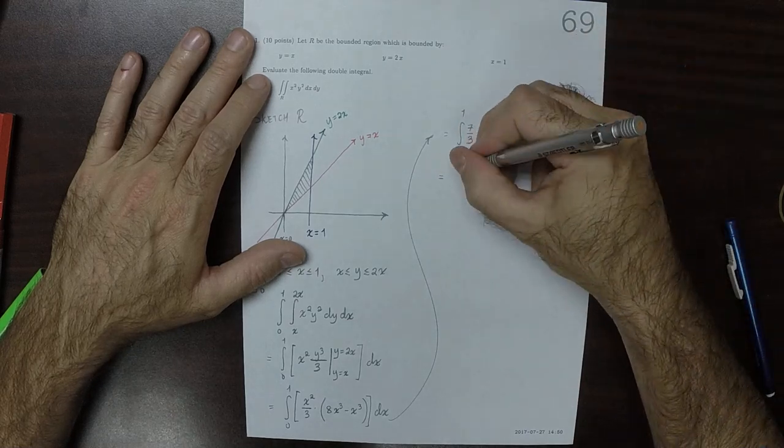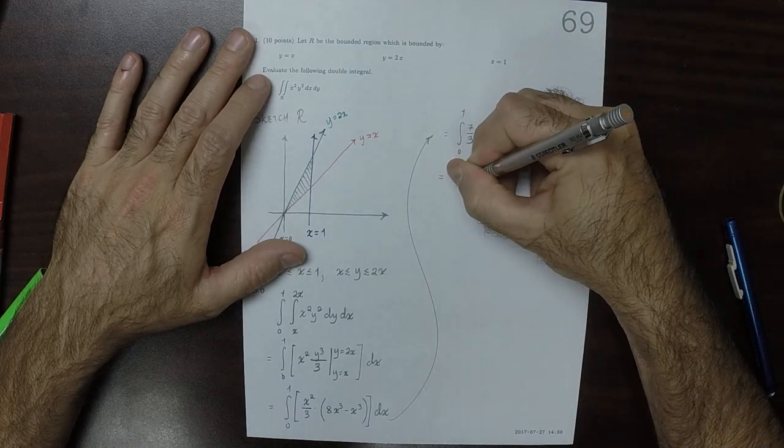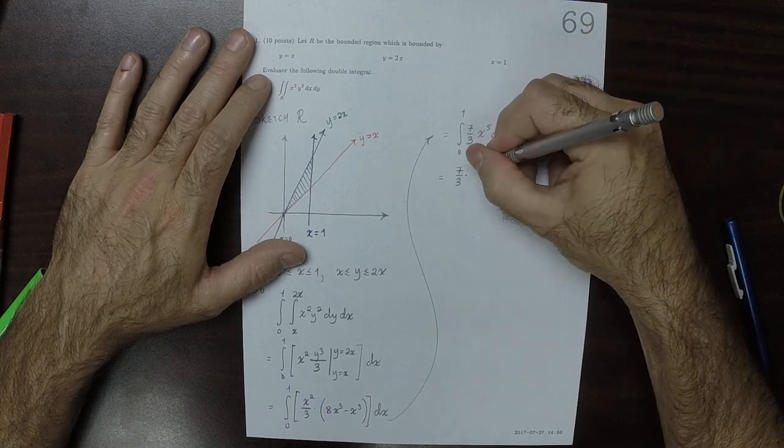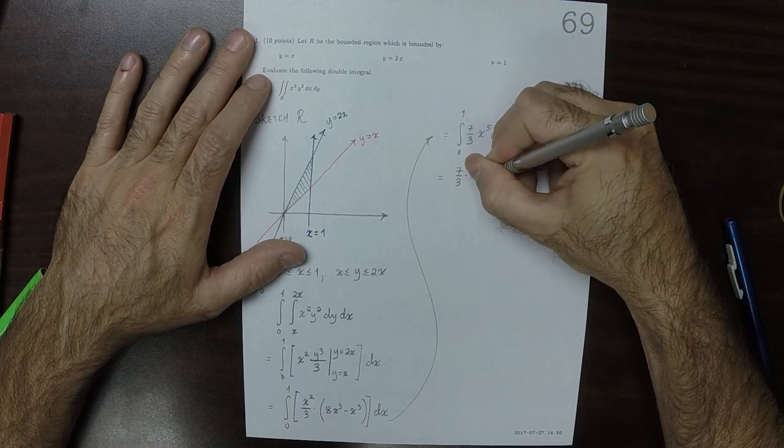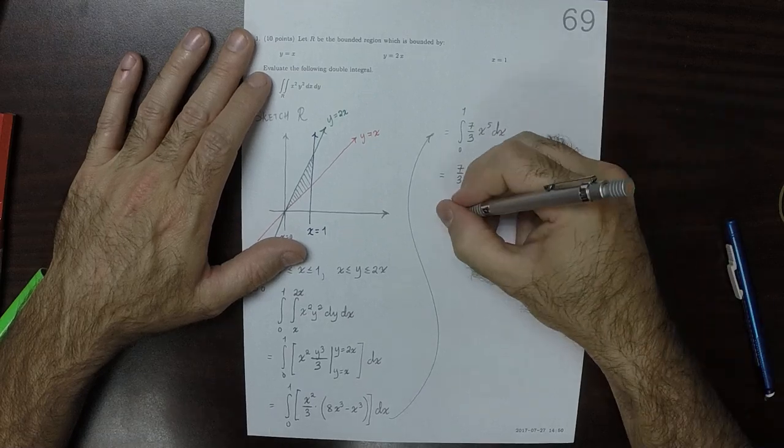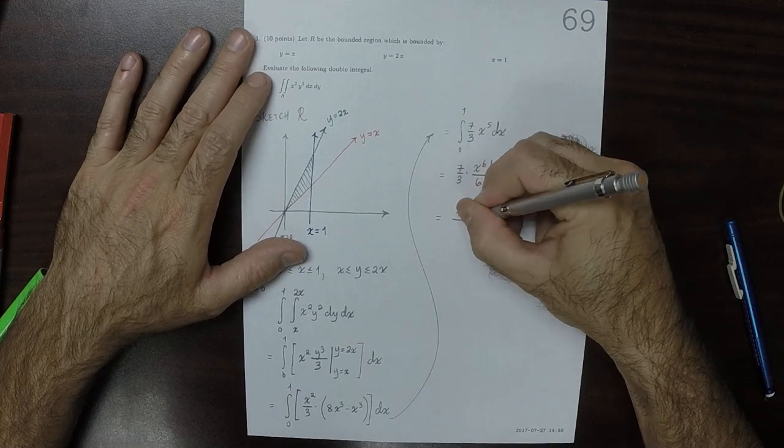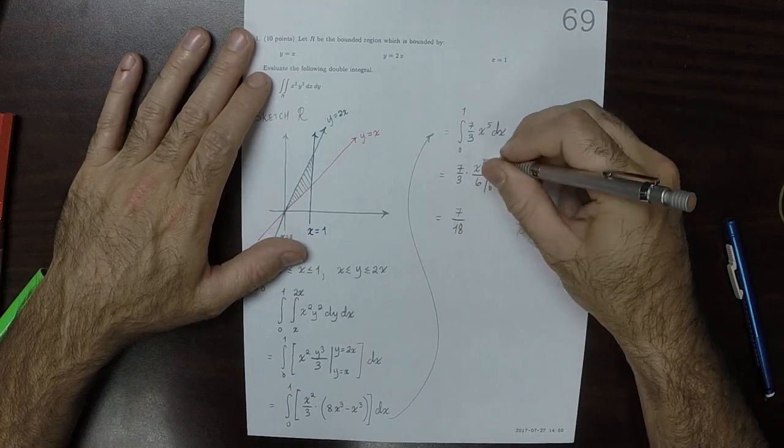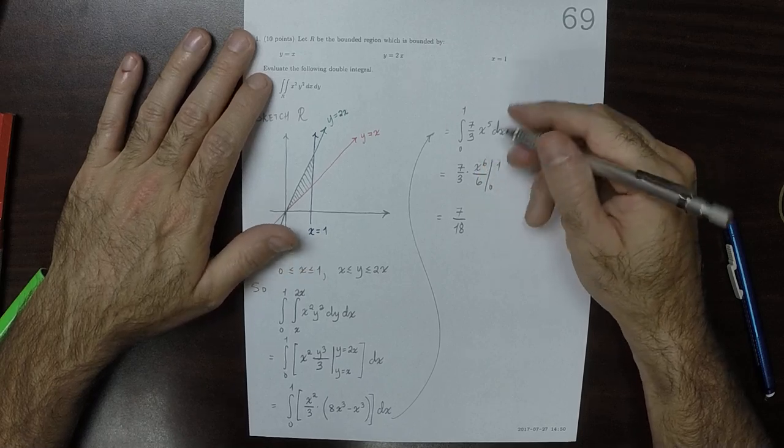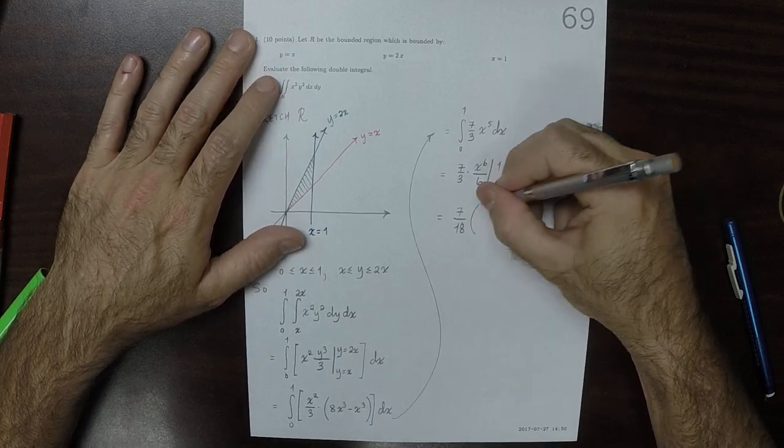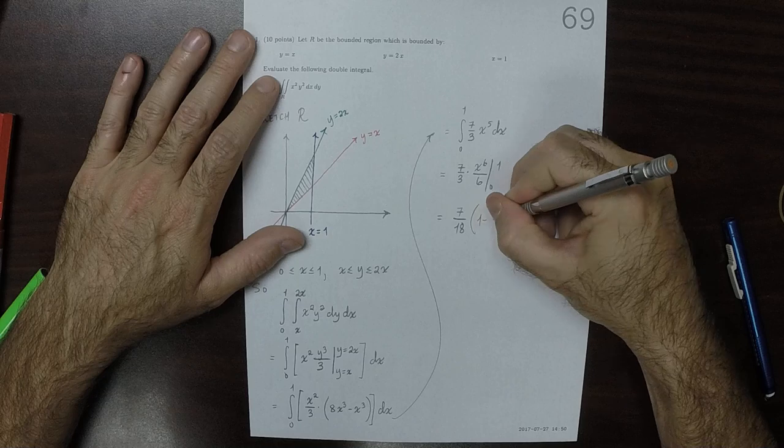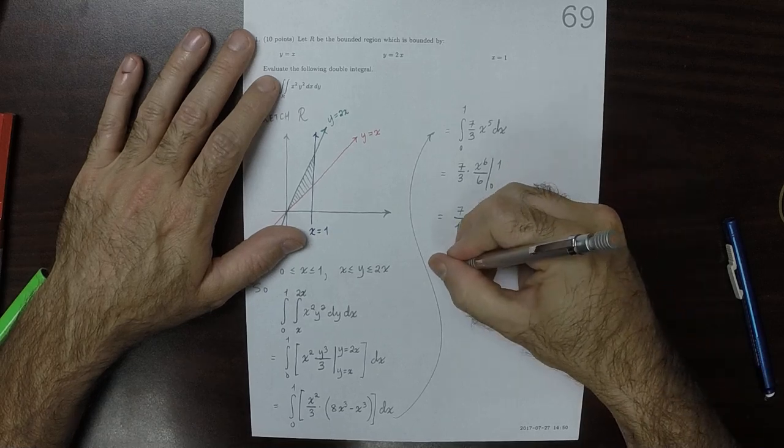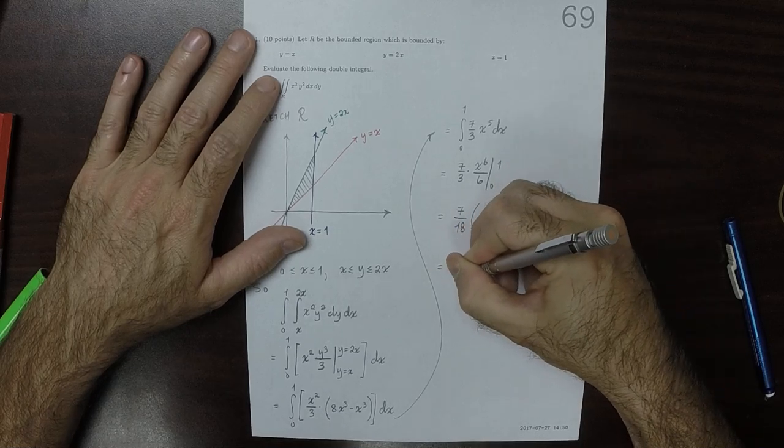So this would be 7 thirds times X to the 6 over 6, evaluated from 0 to 1. So that would be 7 over 18, multiplied by 1 minus 0. So 7 over 18.